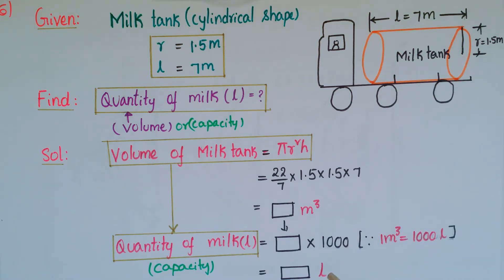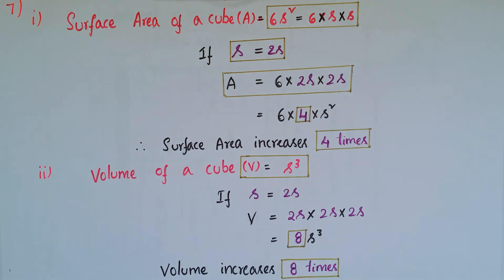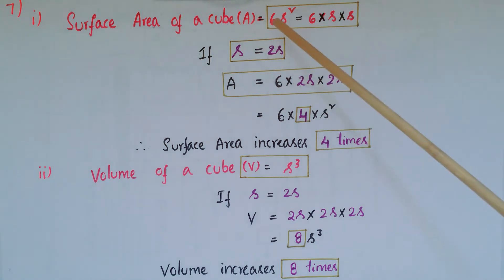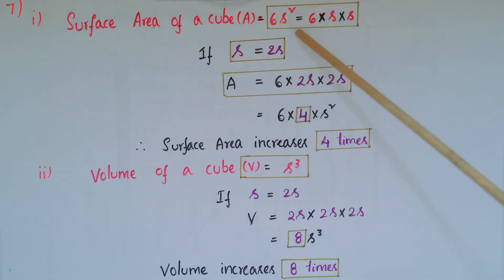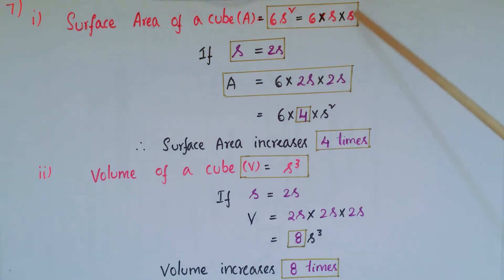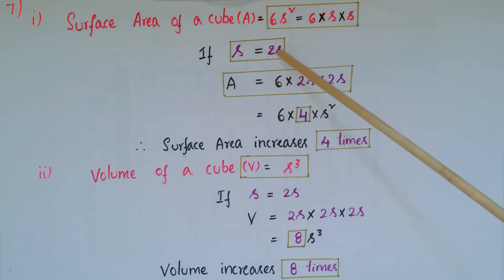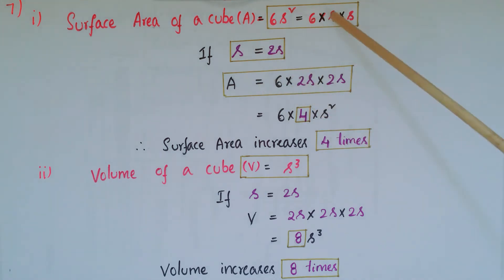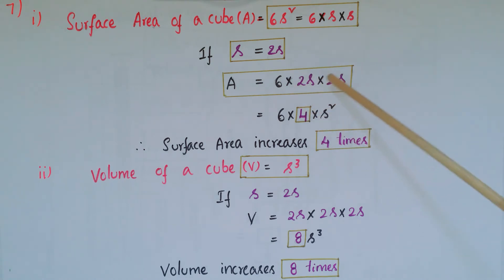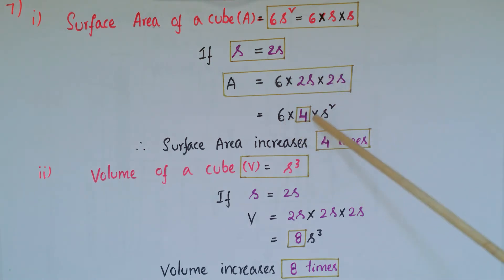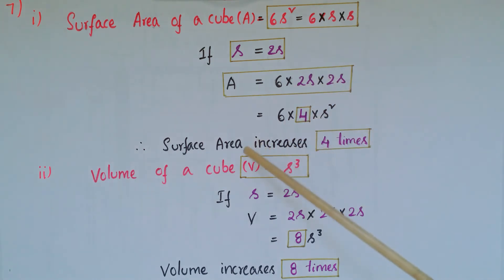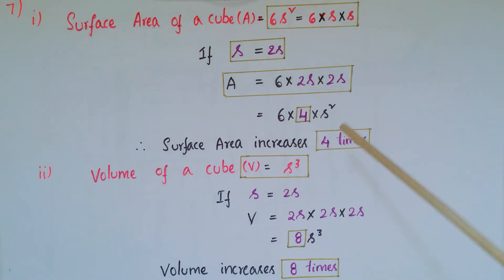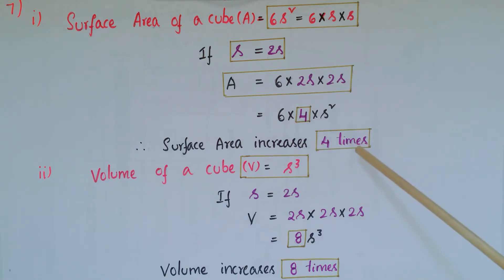This is problem seven. In this problem, each edge of a cube is doubled. The surface area of a cube is equal to 6s squared. Here s is doubled, so replace s with 2s: 6 into 2s into 2s equals 6 into 4 into s squared. So the surface area increases 4 times if each edge of the cube is doubled.